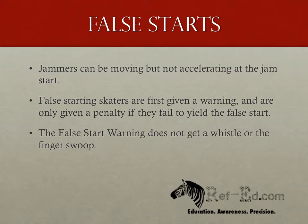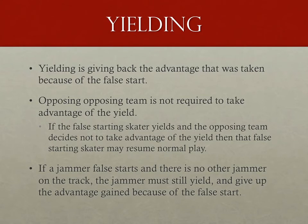In the event that a skater false starts, they are given a false start warning. It's called almost like any penalty — color, number, false start — except that there's no whistle and no swoop of the hand. I still see veteran skaters go to the penalty box when given the warning because it used to be a penalty. Bring them back to the track if possible. If they're bound and determined to sit 30 seconds, don't let your other duties lapse. The same applies for jammers who have false started when there's no other jammer on the track — they should stop and give up the time they picked up because of the false start.